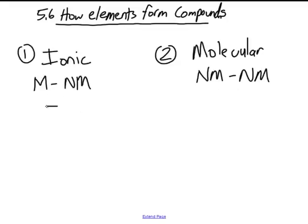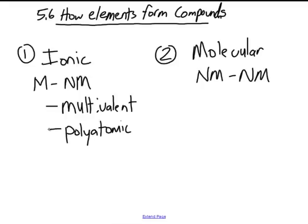Within ionic compounds, there are a couple different classes that we're going to look at in more detail later. One of them being multivalent ionic compounds, and also polyatomic compounds. But for now, we just want to introduce them as the two separate groups that we're going to be looking at.